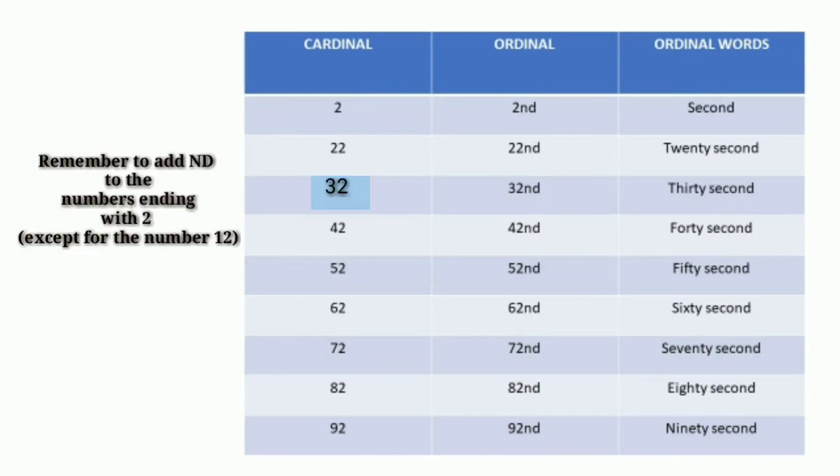Remember to add nd to the numbers ending with 2 except for the number 12. Here we have 2nd, 22nd, 32nd, 42nd,